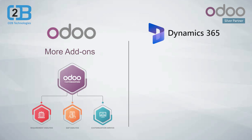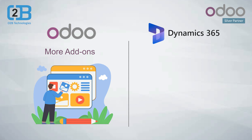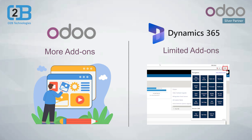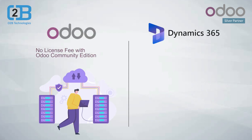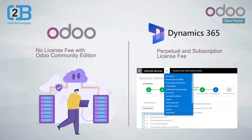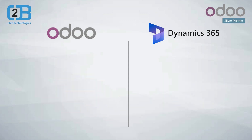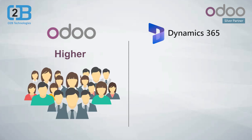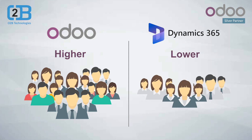Users are able to customize Odoo according to their needs by hiring an Odoo developer and getting add-ons. The add-ons are limited in MS Dynamics. With the Community edition, there is no license fee if you implement Odoo on your own server. Microsoft Dynamics comes with a perpetual license and a subscription license fee. Odoo has over 7 million existing users, while MS Dynamics has 12,000 plus user groups.